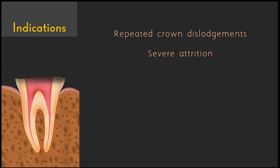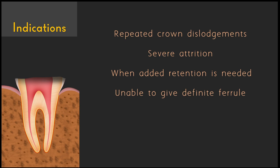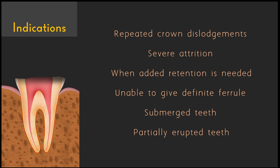In case of severe attrition, the occlusal height of the tooth will be very less. There are many situations where we need extra retention to retain the crown or a fixed partial denture. There will also be situations where we cannot give a definitive 360-degree ferrule around the tooth preparation, or where the tooth is submerged or not completely erupted — most often seen in the case of third molars.